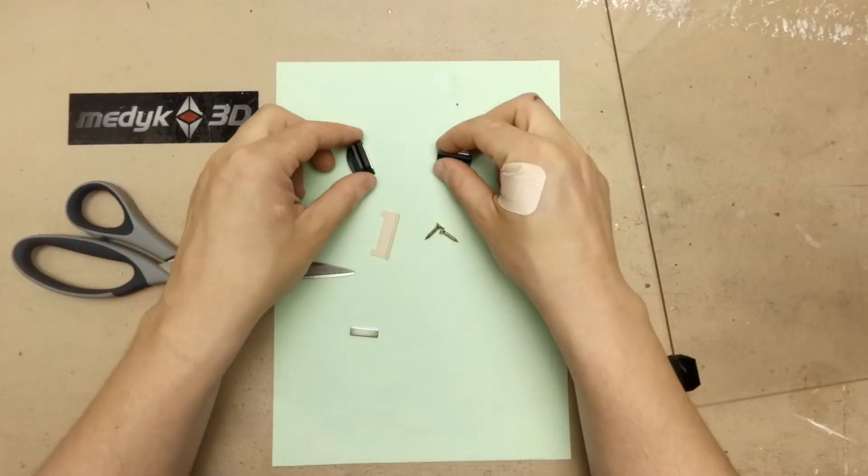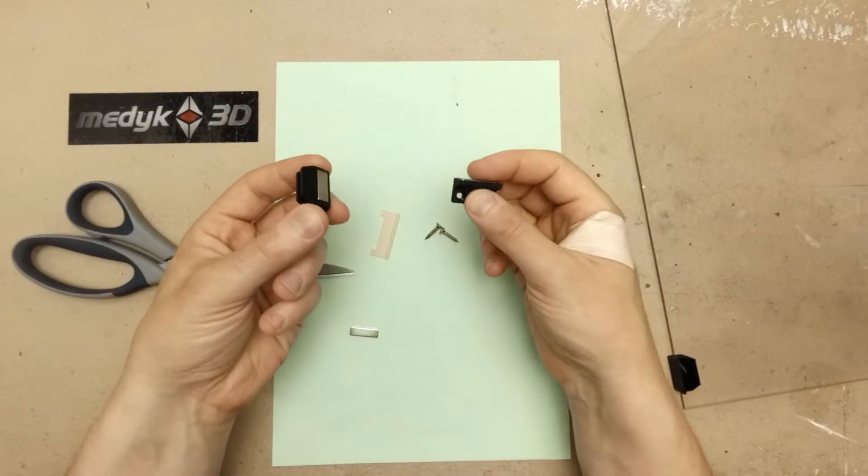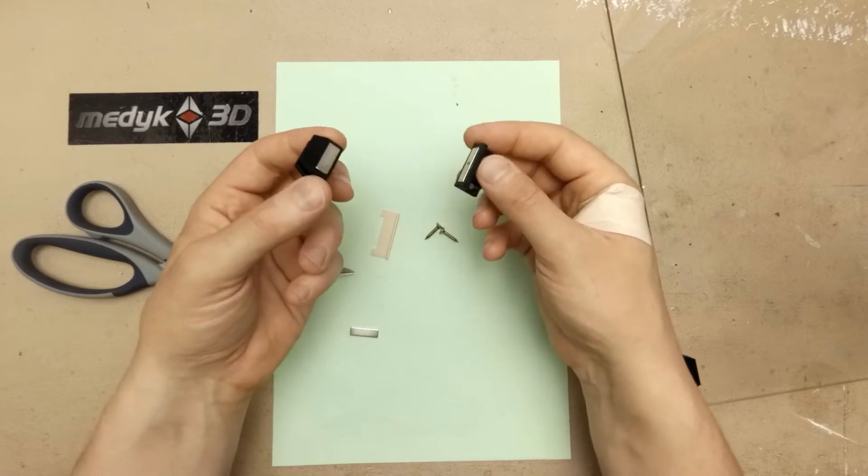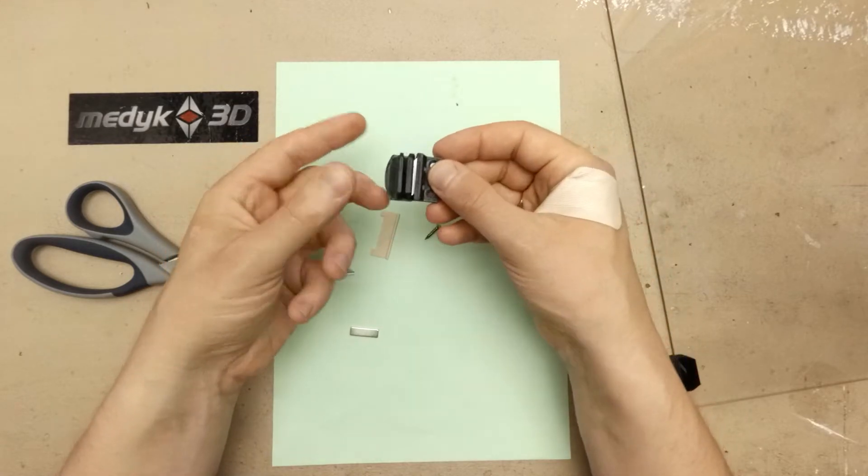Hi, today I will show you how I've made these clips for my 3D printer enclosure made of IKEA-like tables, so my side panels can be easily detachable.